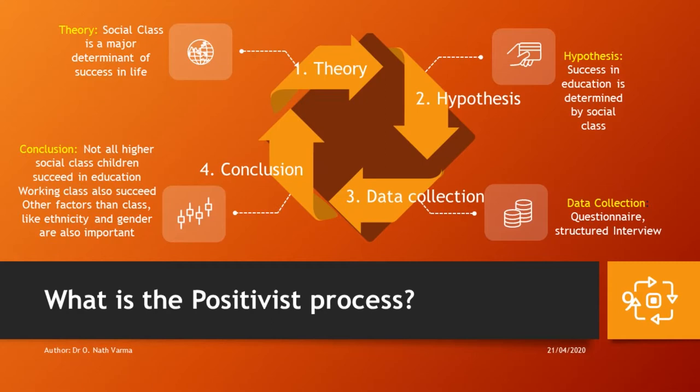Sociologists start the study with a theory — a general idea of certain relationships that exist in society. For instance, we would say that social class is a major determinant of success in life. But this is a very general statement. It talks about certain facts which we are probably aware of, but which we should be able to verify and see whether they apply in a specific context. If the sociologist wants to do research in this area, she can decide to apply it in one particular area of social life, say in education.